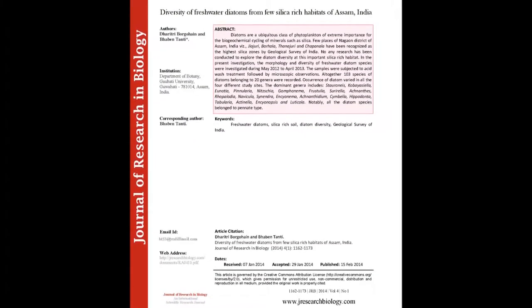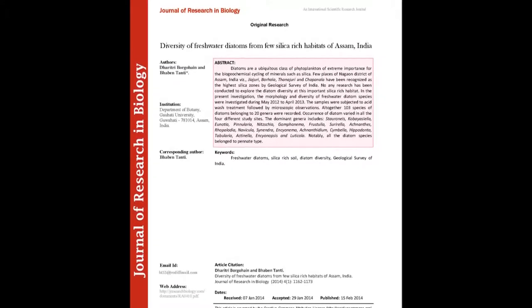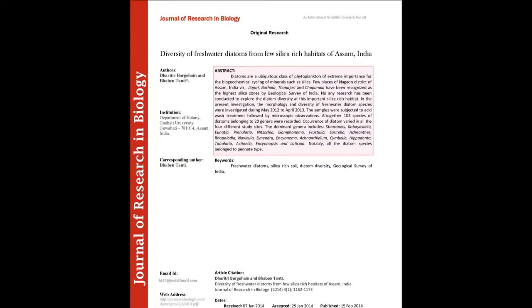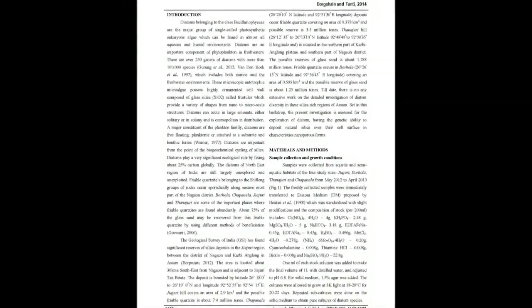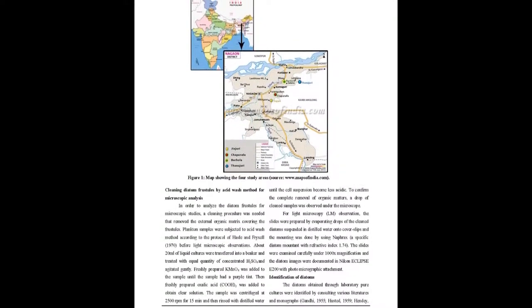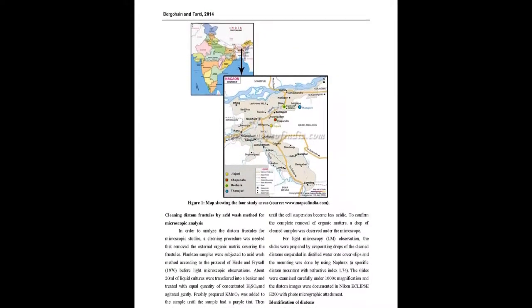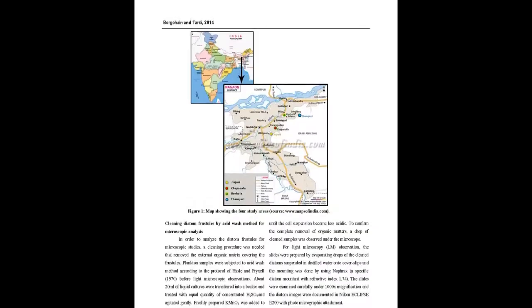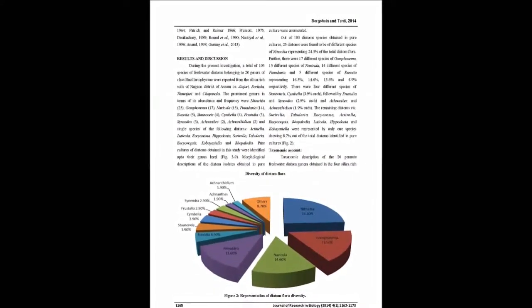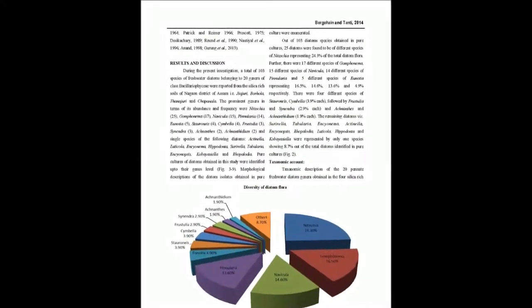Diatoms are a ubiquitous class of phytoplankton of extreme importance for the biogeochemical cycling of minerals such as silica. Few places of the district of Assam, India — viz. Geachuri, Borehala, Phanatjuri, and Chapanala — have been recognized as the highest silica zones by the Geological Survey of India. No research has been conducted to explore the diatom diversity at these important silica-rich habitats.